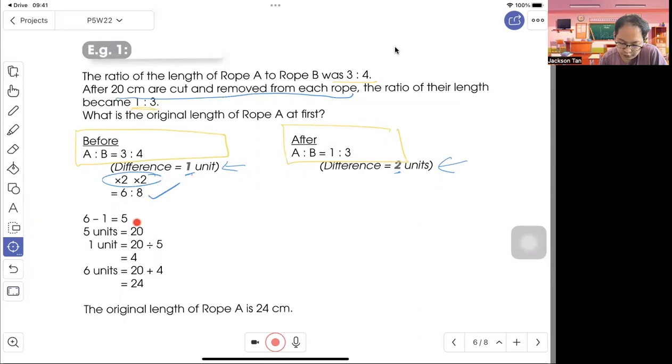Now we compare from 6 to 1, that is 5 units. So 5 units is 20 cm. Then 1 unit will be 20 divided by 5, which is 4. The original length of rope A at first will be 6 units. So 6 times 4 is 24. The original length of rope A is 24 cm.